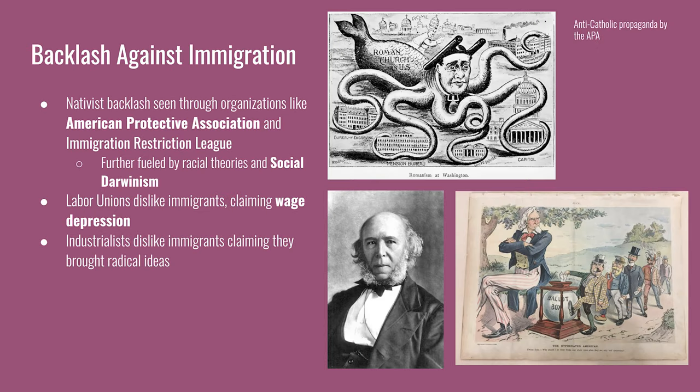Migration coming during the Gilded Age is coming mostly from Southern and Eastern Europe. These are people who speak languages most different from English and previous immigrants. The Irish in the mid-century spoke English and the Germans at this point mostly assimilated. Immigrants from places like Italy, Greece, Turkey, Ukraine, and parts of Russia face a nativist backlash, partly because they are seen as far too different from the typical American. The backlash manifests through the formation of organizations like the American Protective Association and the Immigration Restriction League.